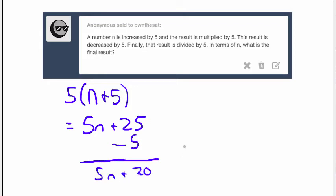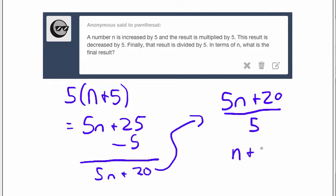And then what happens is that result, which I'm going to move up here, 5n plus 20, is divided by 5. 5n plus 20 over 5.